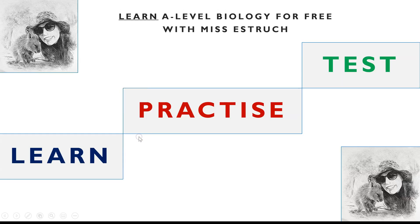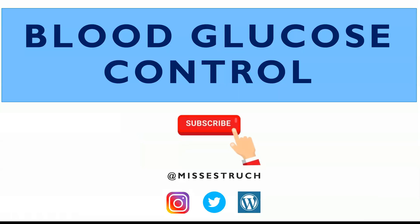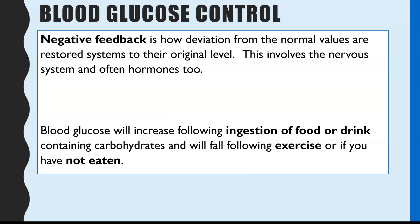Hi everyone and welcome to Learn A-Level Biology for Free with Ms Estrick. In this video I'm going to be going through blood glucose control. This is another example of homeostasis and negative feedback, which is how deviations from the normal values — in this case blood glucose control — are restored back to the original level through different mechanisms, involving the nervous system and hormones.